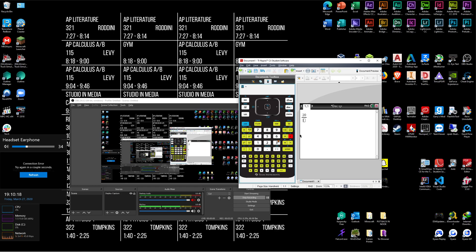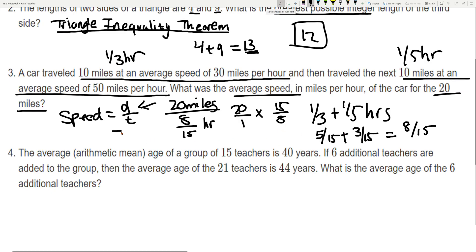So 20 divided by 8 over 15 and that gives us 75 over 2. So 75 over 2 miles per hour is going to be our answer. You can also write this as the decimal form 37.5 miles per hour.